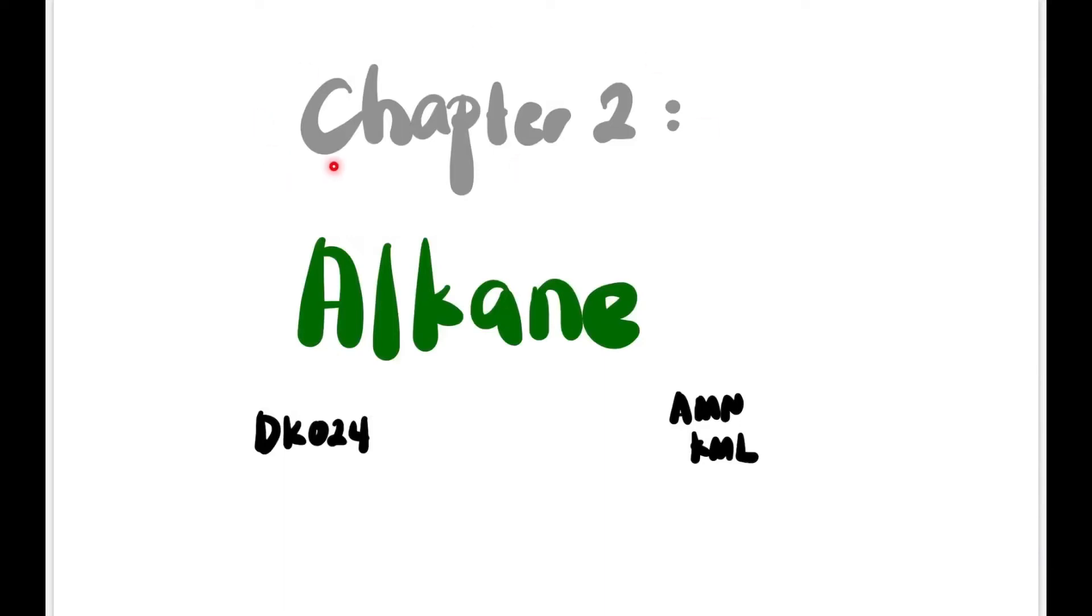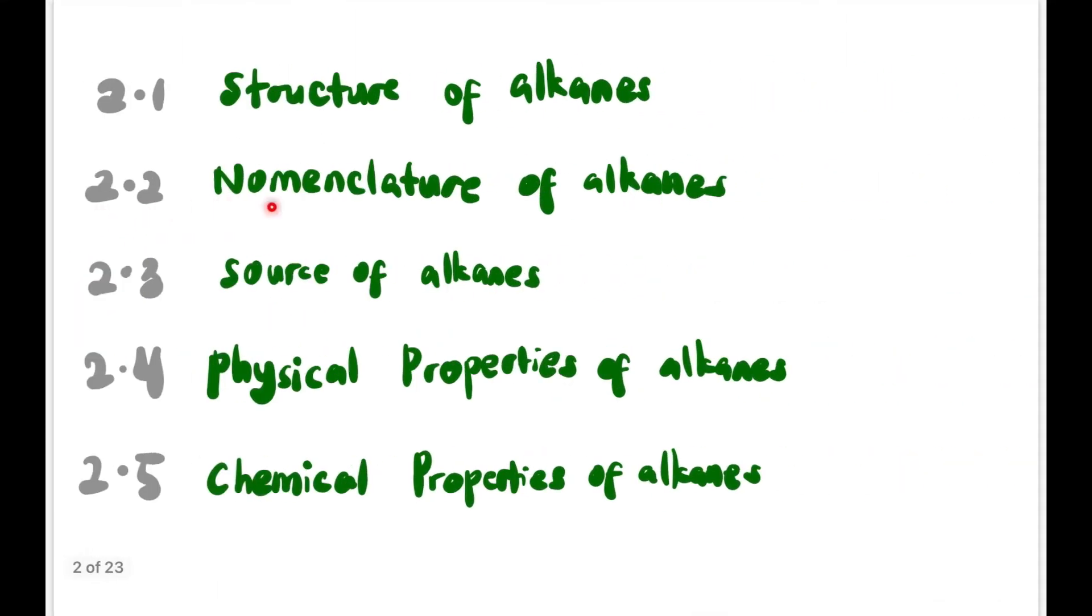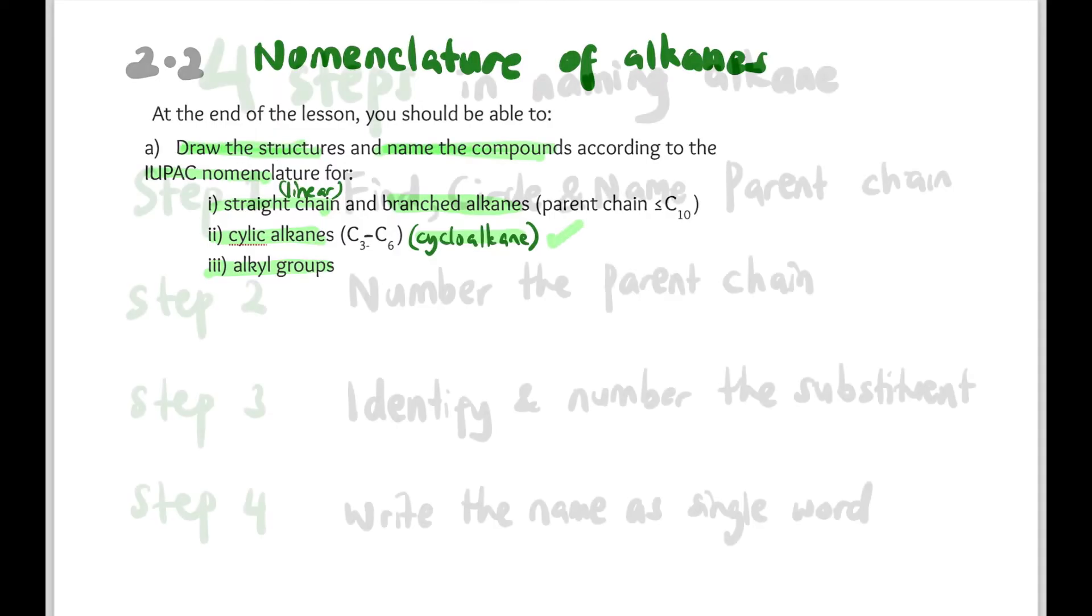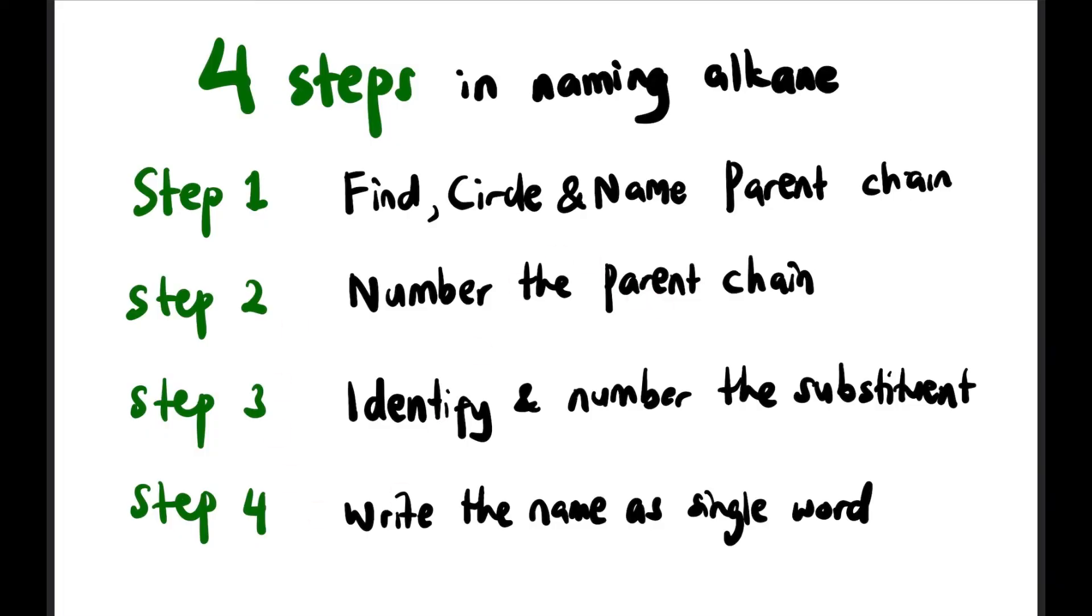Hi guys, welcome back to the channel. This is still chapter 2 alkane, and this is 2.2 nomenclature of alkanes part 2. At the end of this lesson you should be able to draw the structure and name the compounds for cycloalkane. In part 1 we learned the four steps in naming alkane, especially for linear and branched alkane.